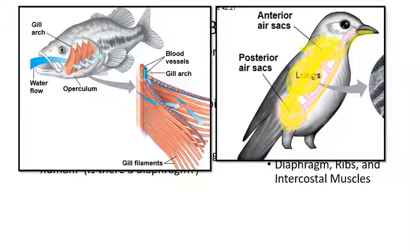The lung tissues in birds are called para-bronchi. Humans have bronchi or bronchial tubes, while birds have para-bronchi in their lungs, which are basically grooves or folds in the lungs meant to have air continuously passing over them.